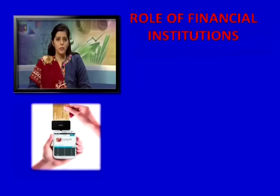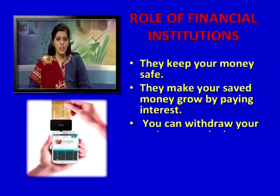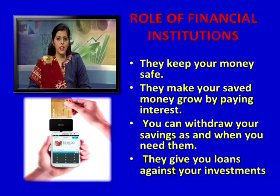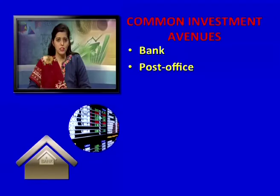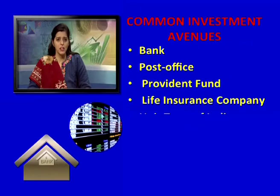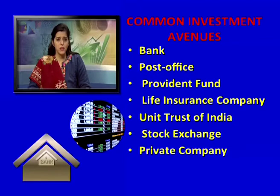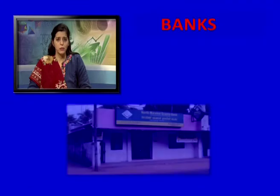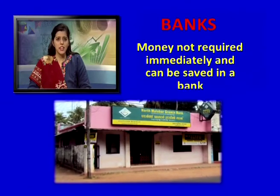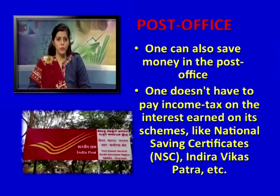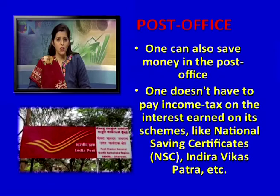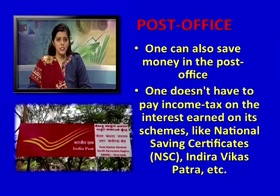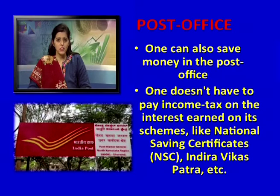Role of financial institutions: they keep your money safe, make your saved money grow by paying interest, allow you to withdraw savings as needed, and give loans against your investments. Common investment avenues include bank, post office, provident fund, life insurance company, Unit Trust of India, stock exchange, private company, and property or jewellery. Money not required immediately can be saved in a bank. One can also save money in the post office, and does not have to pay income tax on interest earned on schemes like National Savings Certificate (NSC) and Indira Vikas Patra.